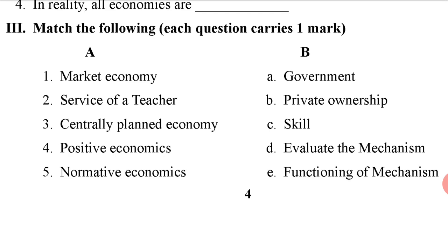Let us match. First: market economy — in market economy, government intervention is not there, private ownership is there. So the answer is B, private ownership. Second: service of a teacher — service of a teacher means skill, knowledge, talent. So the answer is C, skill.